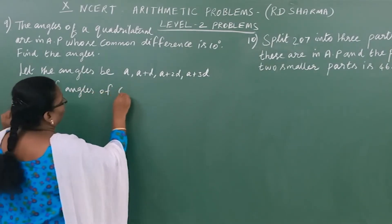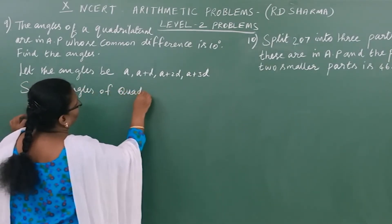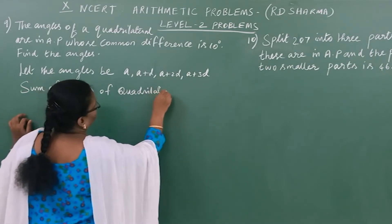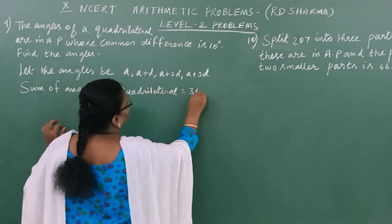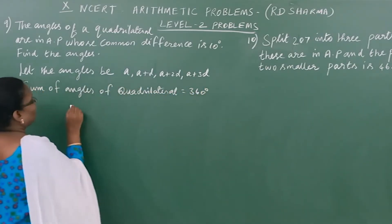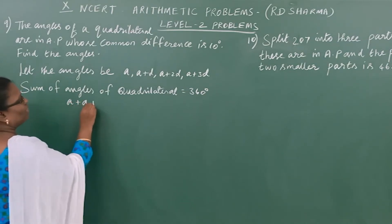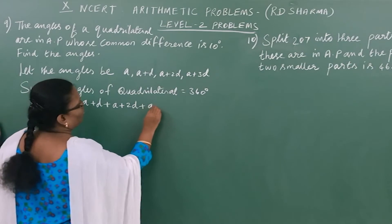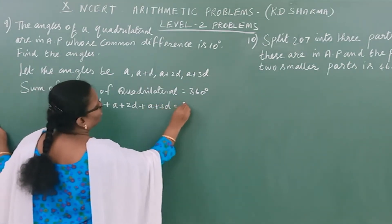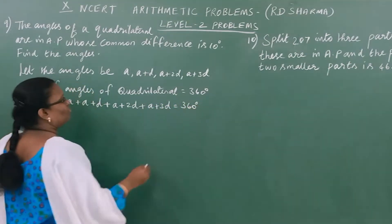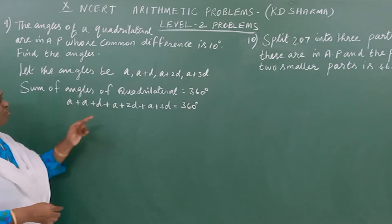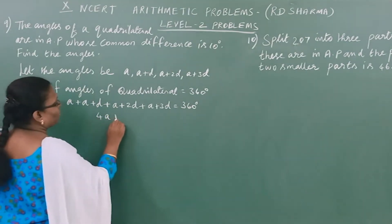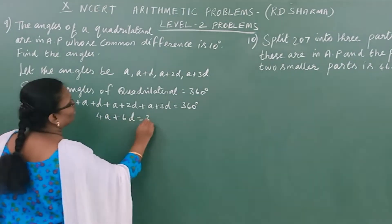Now the sum of angles in a quadrilateral equals 360°. A + A+D + A+2D + A+3D = 360°. This gives us 4A + 6D = 360°.